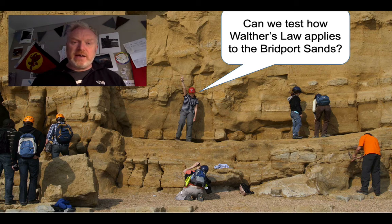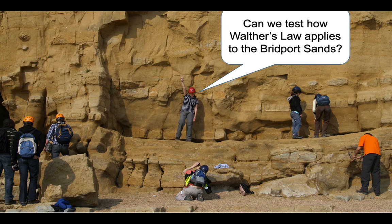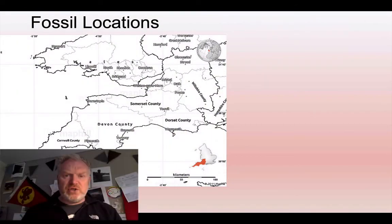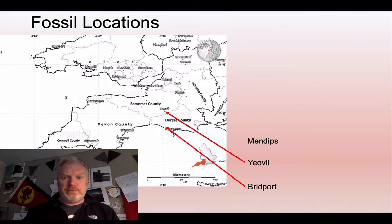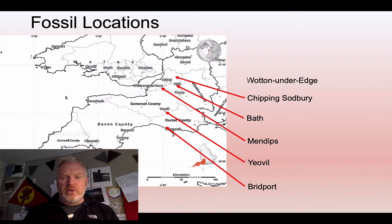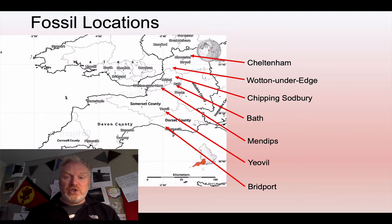For this, you're going to need your A3 handout on the Bridport Sands. You'll also need the list of ammonite zones from this period. Let's have a look at locations first of all. You have data that shows the lithology and fossil zones in these locations. From the south we have Bridport, then Yeovil, the Mendips, Bath, Chipping Sodbury, Wotton Under Edge, the Cotswolds, and finally Cheltenham. I'd like you to mark these locations on your map.